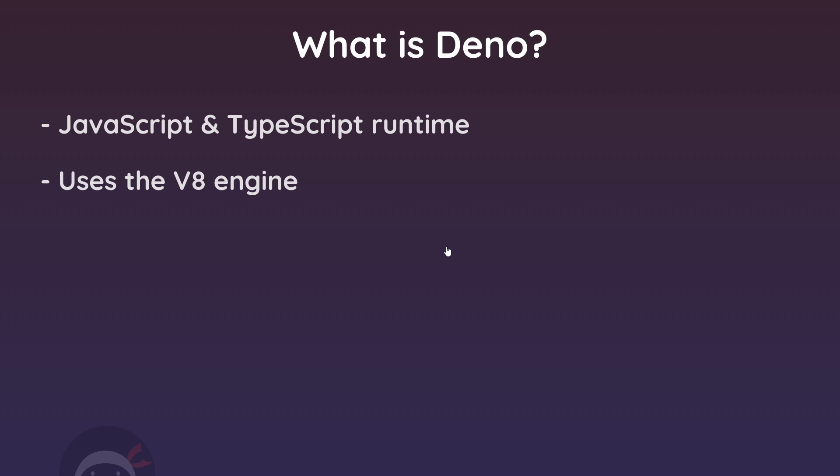So first things first, what is Dino exactly? Well, Dino is a JavaScript and TypeScript runtime and it uses the same V8 engine as Node does under the hood, which allows us to run JavaScript on a computer. In many ways it's very much the same kind of thing as Node.js, which is no surprise considering it's built by the same person who brought us Node in the first place — Ryan Dahl. He regretted some of the things he did with Node and felt he could improve on them, a sentiment shared with most developers at some point in their career.